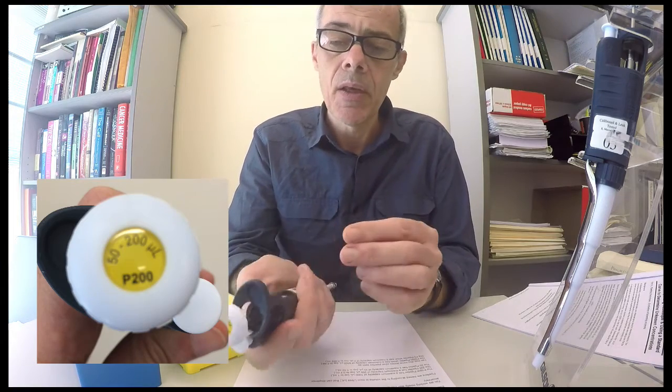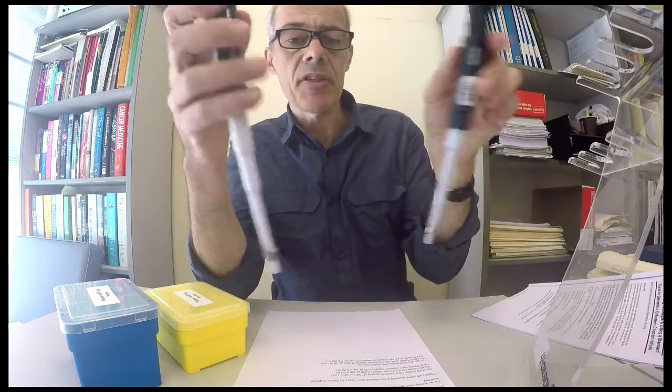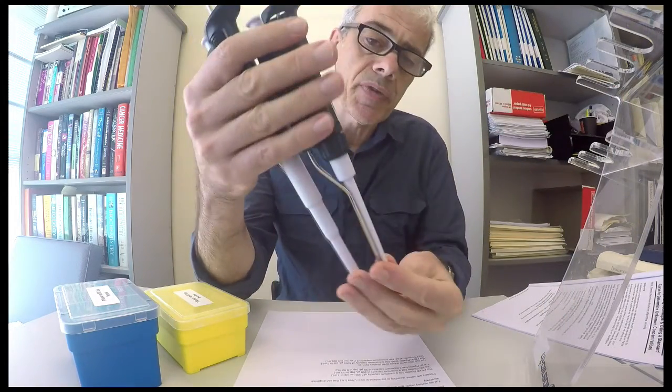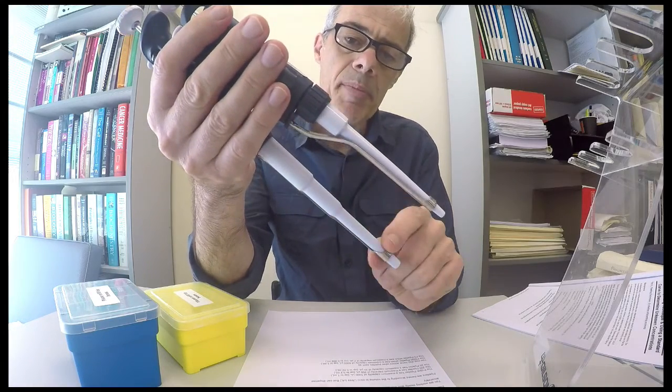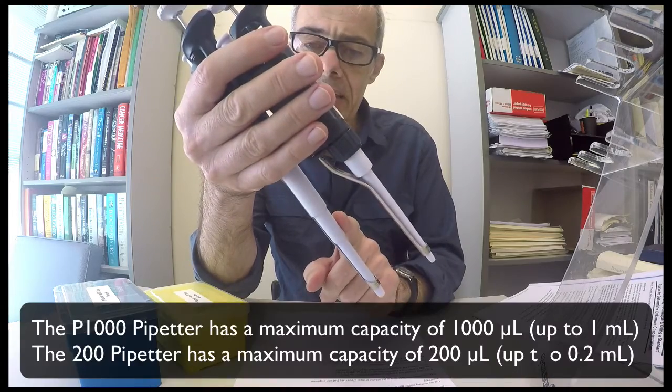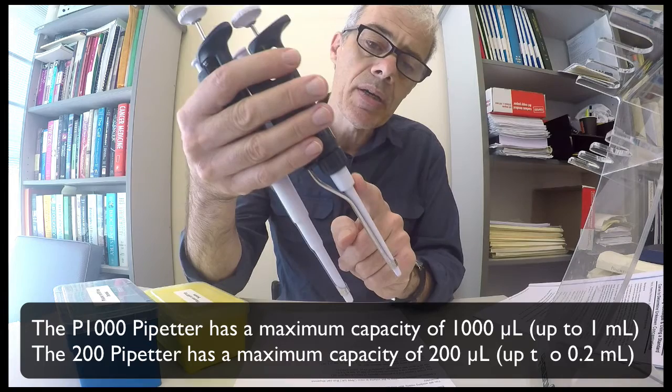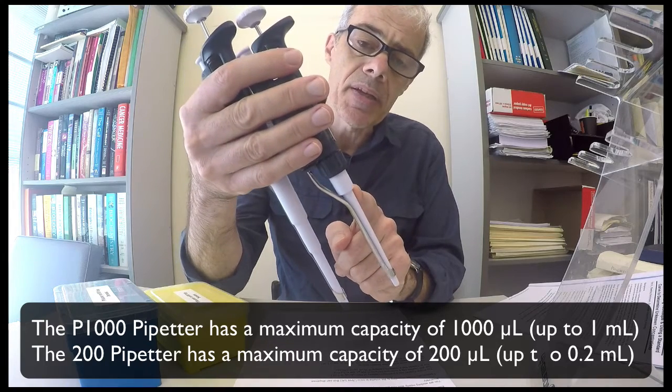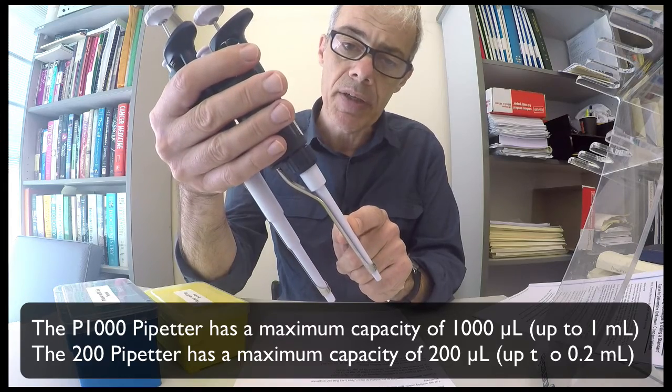If you look at these in comparison, you can see straight away the difference. This pipette here has a much wider barrel and can dispense a much larger volume up to a millilitre or 1000 microlitres. This one has a much narrower barrel and can dispense a smaller volume up to 0.2 of a mil or 200 microlitres.